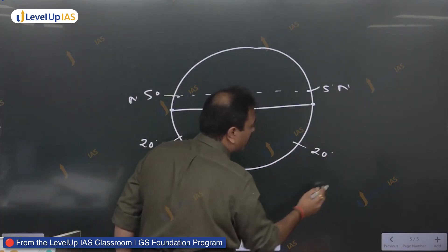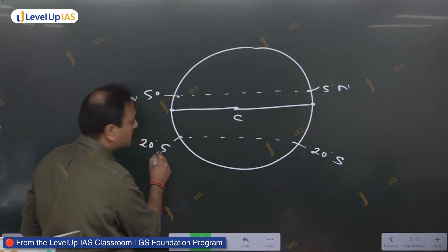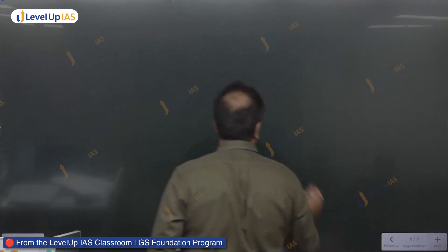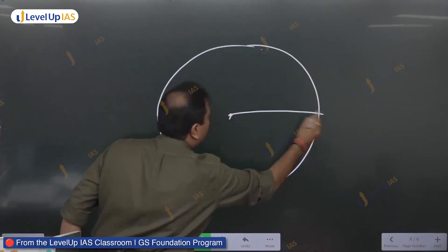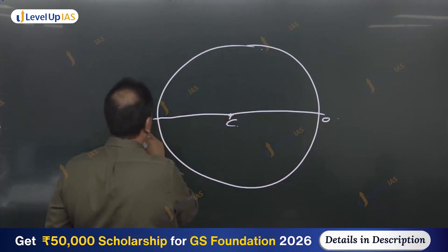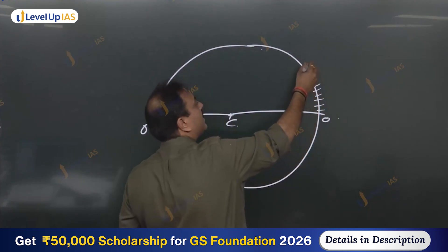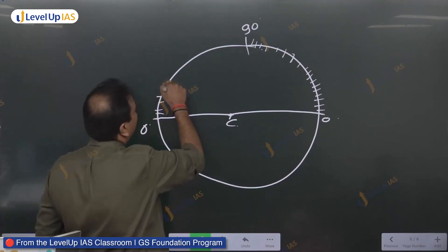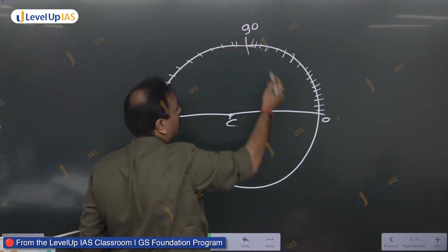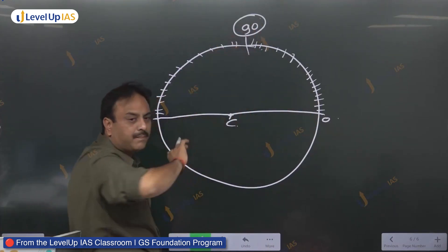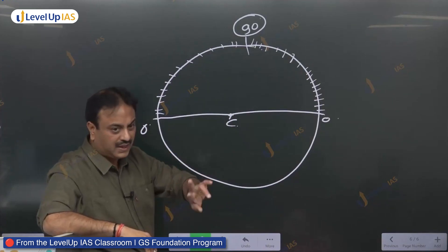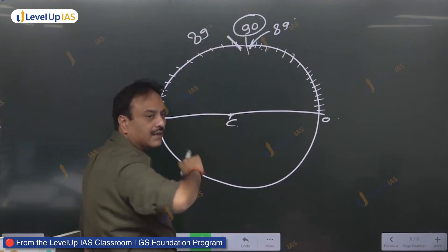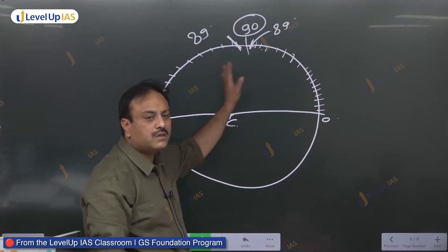In this manner, the center is at 0 degree. At every 1 degree — 1, 2, 3, 4, 5... up to 10 — they marked up till 90 degrees. They marked in the same manner from the other side also. Whether you come from this side or that side, 90 degrees would be one and the same — it will not be two different points. 90 degrees will be one and the same.